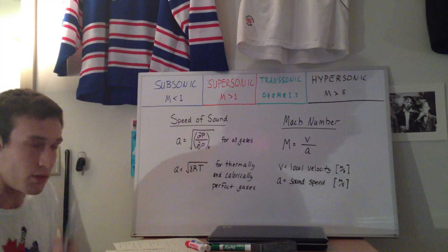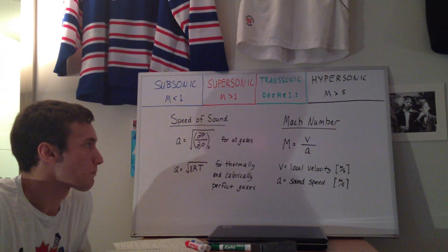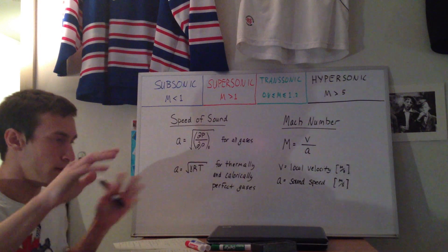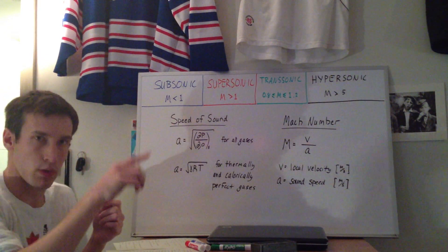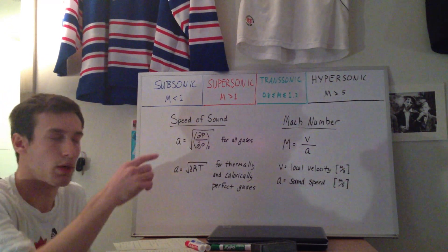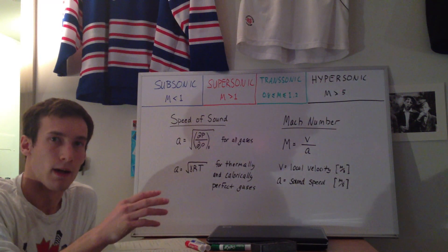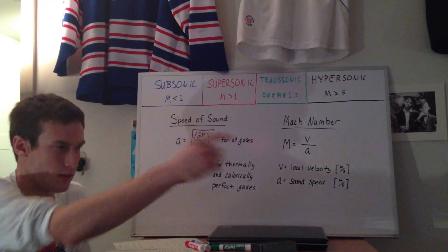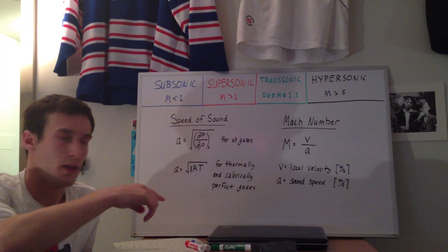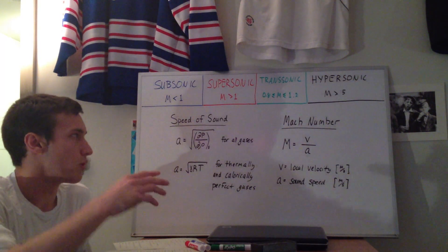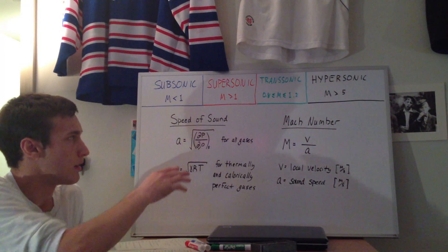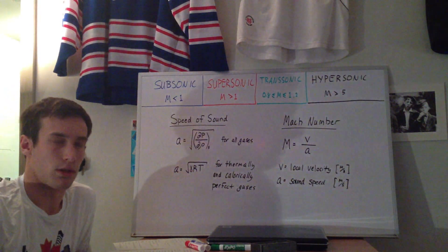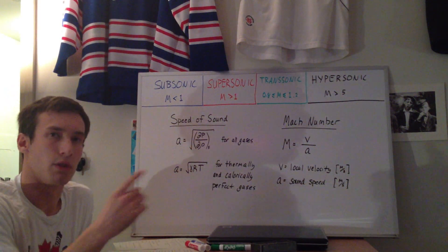You can imagine a flow field where, even in this room, at every single point there are molecules, and at every single point these molecules are traveling at different velocities, and the temperature differs from point to point. So you end up getting not just one Mach number for the entire room — it's different at every single point.